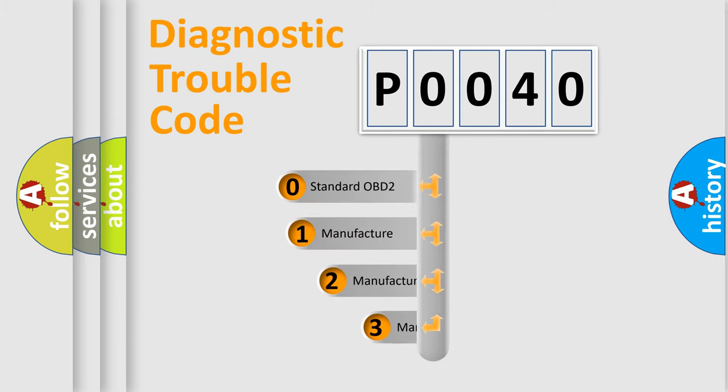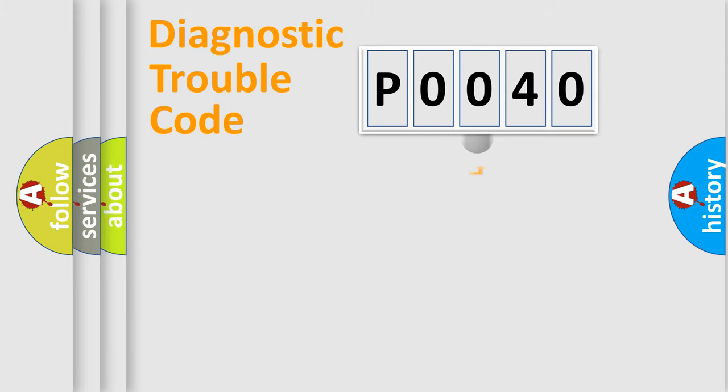If the second character is expressed as zero, it is a standardized error. In the case of numbers 1, 2, 3, it is a more specific expression of the car-specific error.